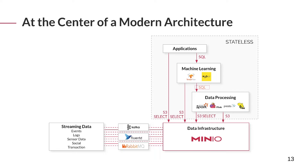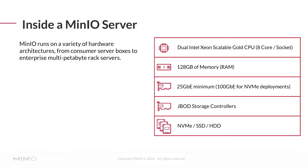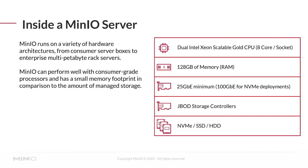MinIO runs on a variety of hardware architectures, fully supporting consumer-level server boxes all the way through enterprise gear. The table describes a bare minimum for a production deployment — it works fine with consumer-grade processors and has a relatively small memory footprint relative to the amount of storage. CPUs tend to control performance around things like TLS encryption per connection, object encryption, and erasure coding, which requires some level of hashing.